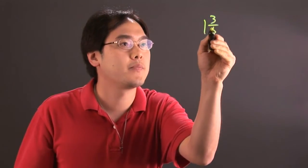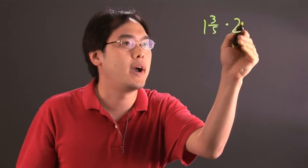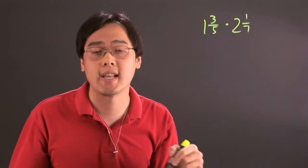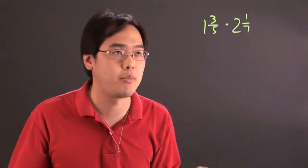So let's talk about multiplication first and we'll go from there. So if you have one and three-fifths multiplied by two and one-seventh, what you got to do first is take every mixed number and convert it to an improper fraction.